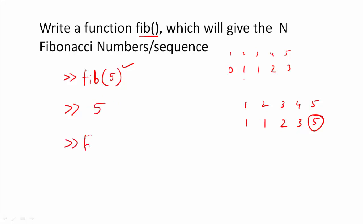I should get Fib of the 4th value, and the Fibonacci value should be 3. If we know how Fibonacci works, then we define a function. We define the value inside the function, and we have to save the file with the same name.